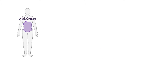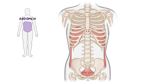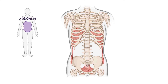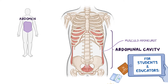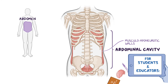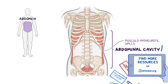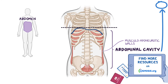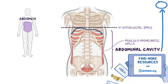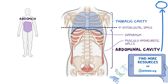The abdomen is a part of the body sometimes casually referred to as the belly or torso. The organs within this area are said to be contained within a space known as the abdominal cavity, which is bounded by the musculo-aponeurotic walls anterolaterally. Superiorly, the abdominal cavity extends into the thoracic cage to the fourth intercostal space and is separated from the thoracic cavity by the diaphragm.